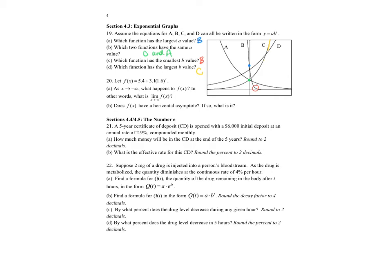On 20, I have let F of X be defined by that function. As X goes to negative infinity, what happens to F of X? If I think about that function, it's shifted up by 5.4 units, and then the rest of it just looks like an exponential. So it's going to go like that. As X goes towards negative infinity, my function value is getting closer and closer to 5.4. Does F of X have a horizontal asymptote? Yes, it does. What is the horizontal asymptote? It's the line Y equals 5.4.